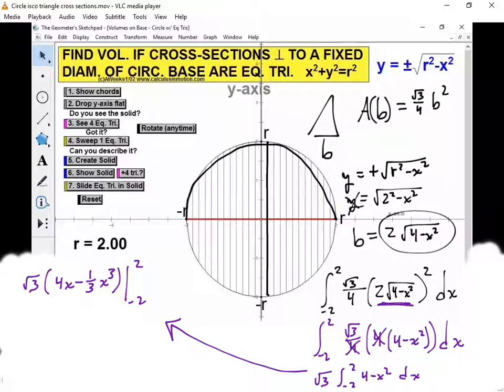So if I plug in positive 2, I get rad 3 times, that's going to be an 8 minus, positive 2 raised to the third is going to be an 8. So I have 8 over 3 minus. And I'm going to put parentheses around this guy. Negative 2 plugged into the 4 is going to be a negative 8. And negative 2 plugged into this is also going to be a negative 8.